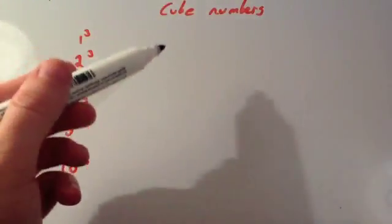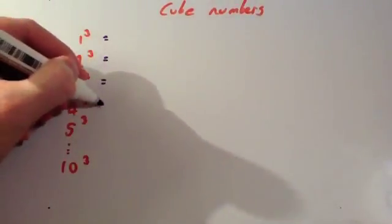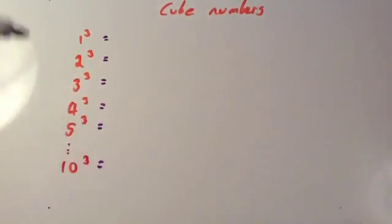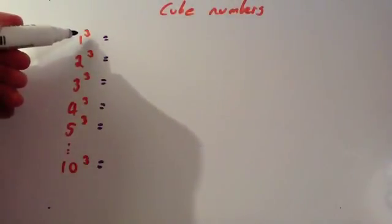Now we're going to look at our cube numbers and they're just as important to learn. You'll remember from watching the video on cubing numbers. And if you haven't seen the video on cubing numbers, watch it now. To cube a number, you multiply it by itself and by itself again.